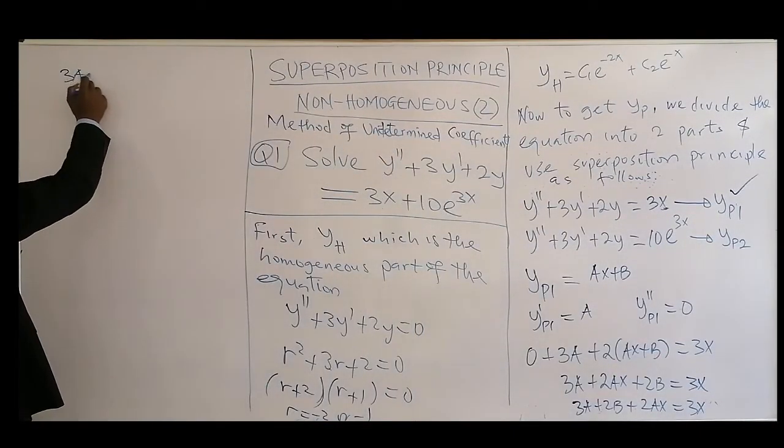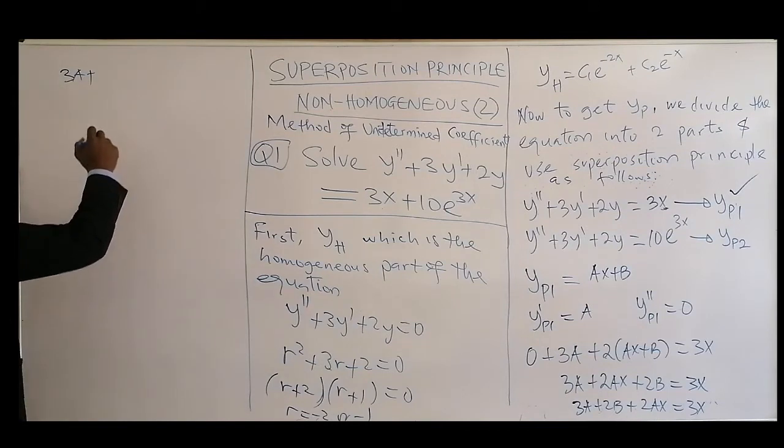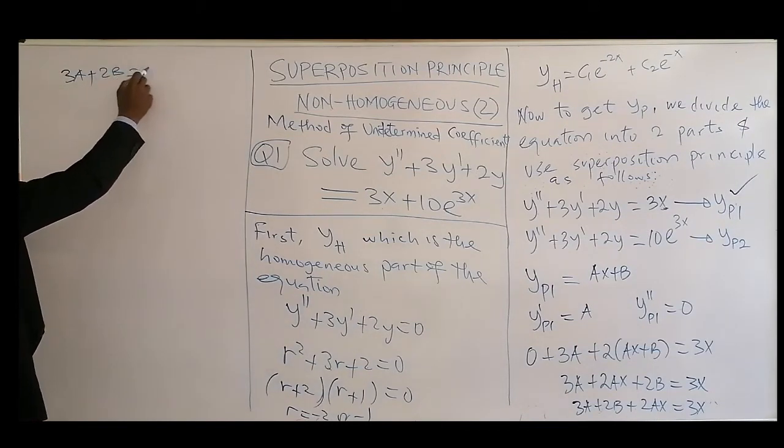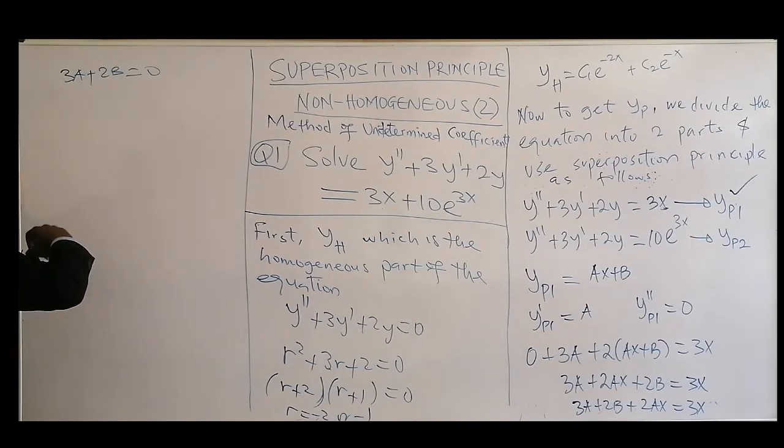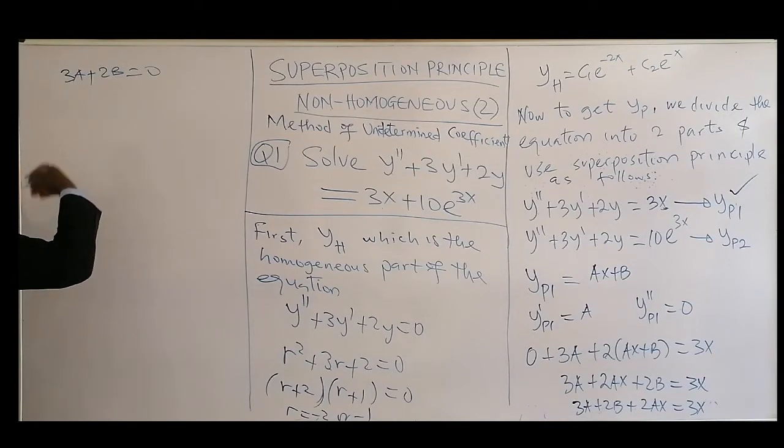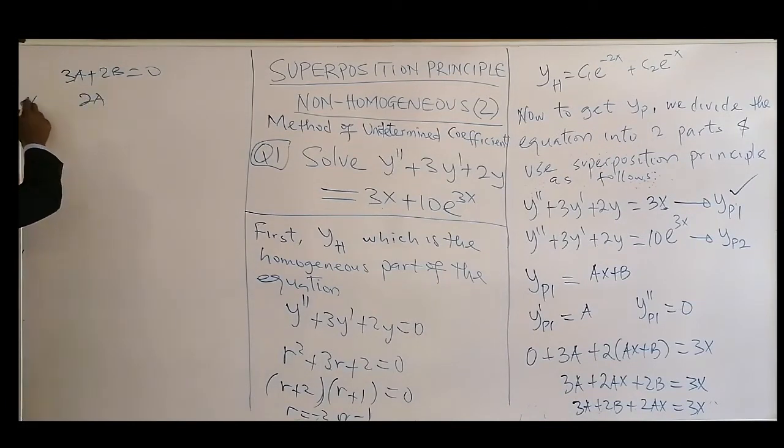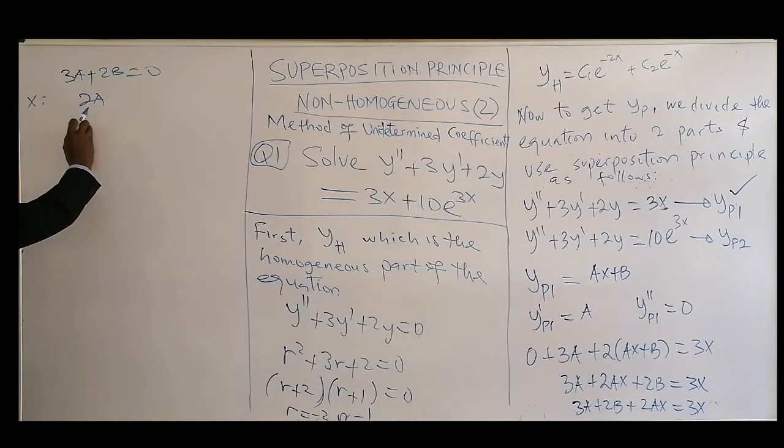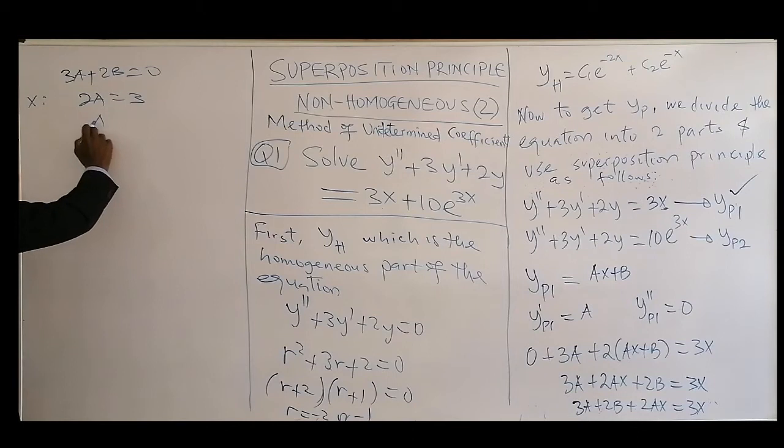If you equate the coefficients, 3A plus 2B is equal to 0. Constant term. Equal to the coefficient of x, that will be 2A. This is the coefficient of x 2A, equal to 3.